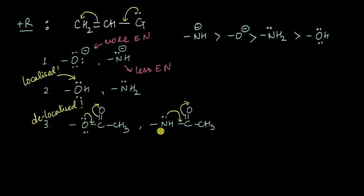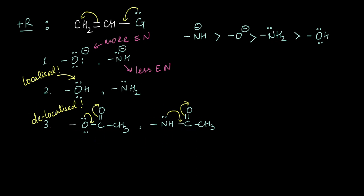So these groups are definitely going to be weaker plus-R groups than OH and NH₂. Between OCOCH₃ and NHCOCH₃, in both cases the lone pairs are delocalized, so we again use electronegativity: oxygen is more electronegative than nitrogen, so electrons are more tightly held by oxygen. Therefore NHCOCH₃ will be a stronger plus-R compared to OCOCH₃. Overall, OCOCH₃ and NHCOCH₃ are weaker than the neutral OH and NH₂ groups.